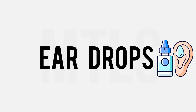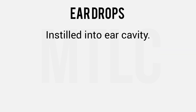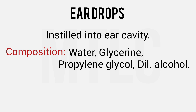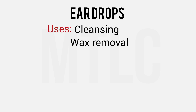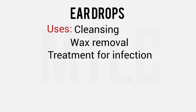Next are ear drops. You will all be very familiar with them — they are instilled into the ear using a dropper. The solution vehicle is normal water, glycerin, propylene glycol, or dilute alcohol — mostly glycerin, propylene glycol, or dilute alcohol. Ear drops are used to clean the ear, soften wax, or treat mild infections.